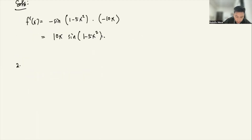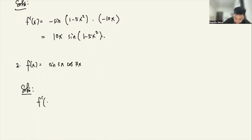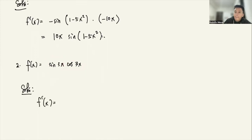For number 2, let's say our function f of x is equal to sine(3x) times cosine(3x). How do we take the derivative for this? We have two functions here — this is the product rule, as covered in the previous video.